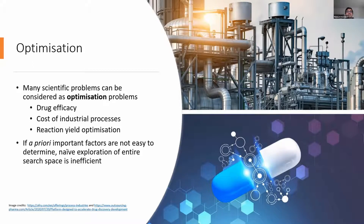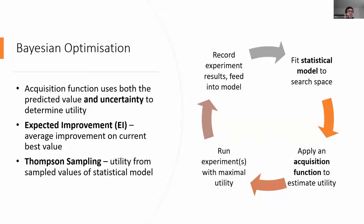Chemical reactions can take hours or days to complete, so trying out every single possible reaction condition is not feasible. The solution is a technique called Bayesian optimization, where you start with your search space — in our case the set of possible reaction conditions.